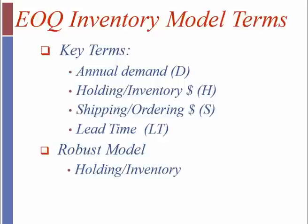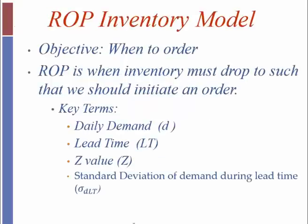Conversely, we've got the ROP model, the reorder point inventory. This model is trying to tell us when to order. ROP is what our inventory needs to drop down to, to tell us that it's time to initiate an order. With ROP, we have some of the same terms but not all the same. We have a little d, which is daily demand, versus the other is an annual demand. We still are going to be using lead time. And in this computation, we're going to be using our old friend, the Z value. In this case, we specifically are interested in the standard deviation of demand during lead time.